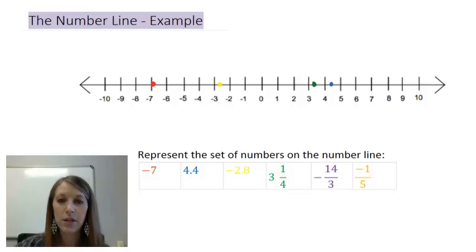Next is negative 14 thirds, and this is probably the most difficult one because it's not the easiest to see right offhand. If you need to convert it to a mixed fraction or come up with the decimal representation of it, that's perfectly fine. I'm going to convert it to a mixed fraction.